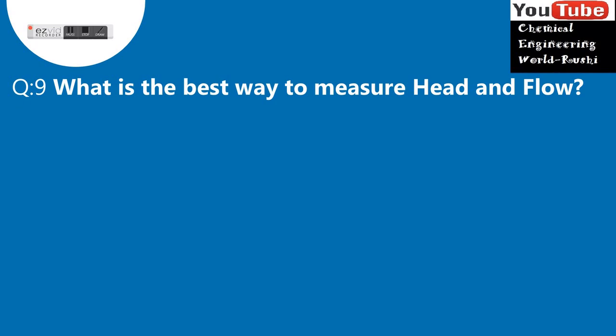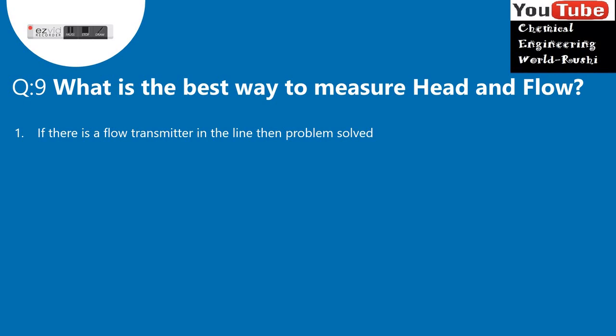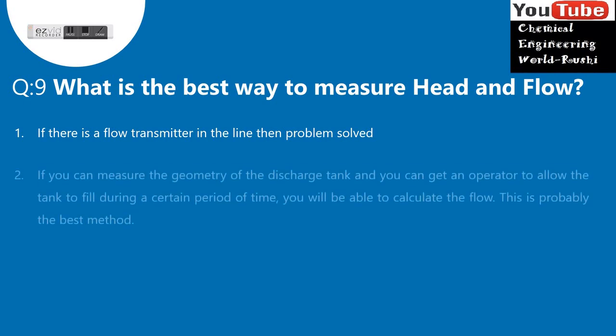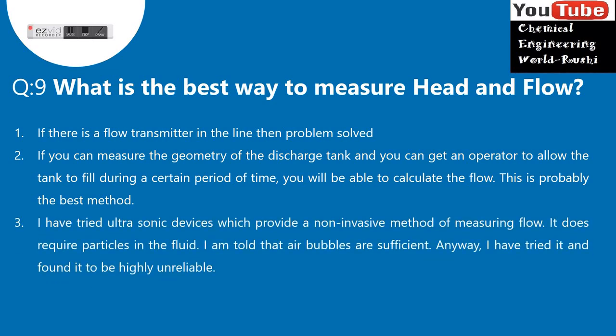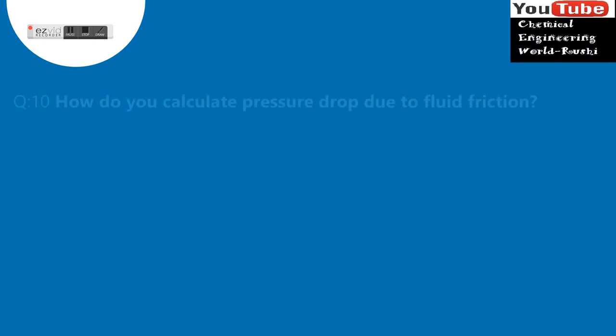Question 9: What is the best way to measure head and flow? 1. If there is a flow transmitter in the line, then problem solved. 2. If you can measure the geometry of the discharge tank and get an operator to allow the tank to fill during a certain period of time, you will be able to calculate the flow. This is probably the best method. 3. I have tried ultrasonic devices which provide a non-invasive method of measuring flow. It does require particles in the fluid — I am told that air bubbles are sufficient. However, I have tried it and found it to be highly unreliable.